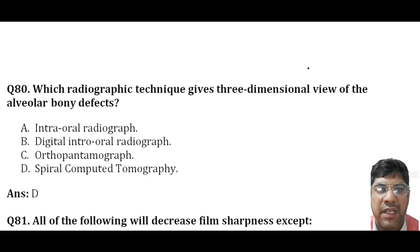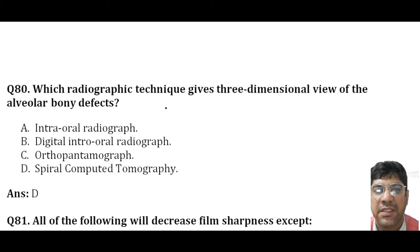Which radiographic technique requires a three-dimensional view of the alveolar bone defect? It is the spiral CT, which allows assessment of alveolar bony defects and other anatomical structures in three dimensions, eliminating superimposition of overlying structures.